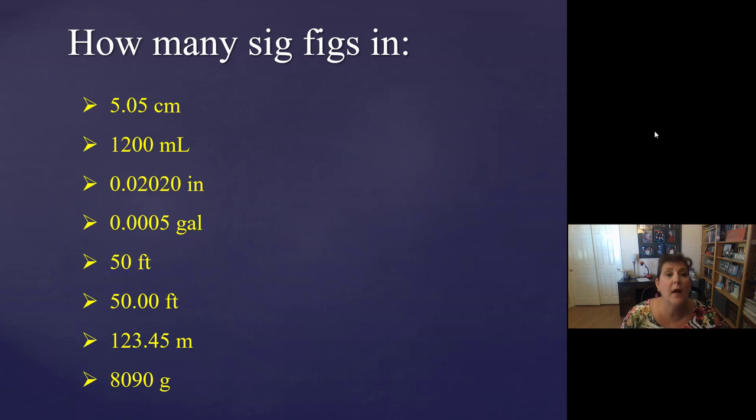All right. First one, 5.05 centimeters has three sig figs. The five and the five count the zeros in between, so it counts. Three sig figs. 1,200 milliliters. Those zeros are at the end and there's no decimal point, so they're placeholders. So only the one and the two count, two sig figs.